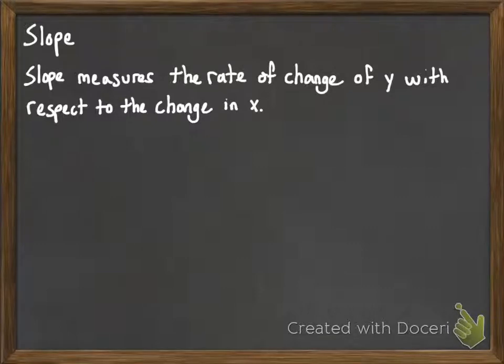And we actually do that comparison by division. So we take the rate of change of y, divide it by the rate of change of x.